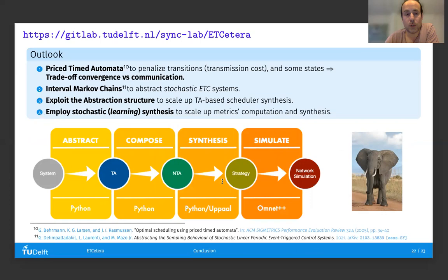Finally, some outlook on the future. We are working towards incorporating penalties on transmissions and adding costs at the locations of our timed automata abstractions so that we can establish trade-offs between convergence and communication and then use some of the flavors of UPPAAL to solve price-timed games. We have been constructing abstractions of stochastic event-triggered control systems in the form of interval Markov chains and computing metrics of these systems. We've been exploring the structure of the abstractions to scale up the synthesis of schedulers and even using stochastic learning synthesis to scale up some of these procedures.